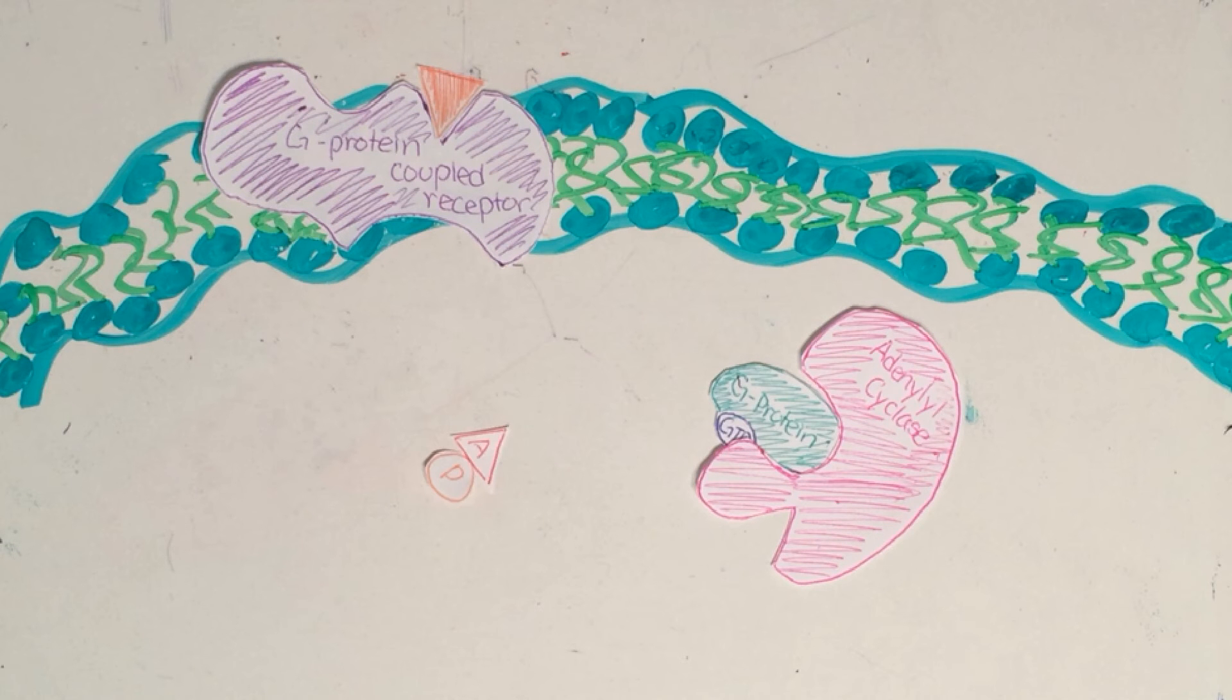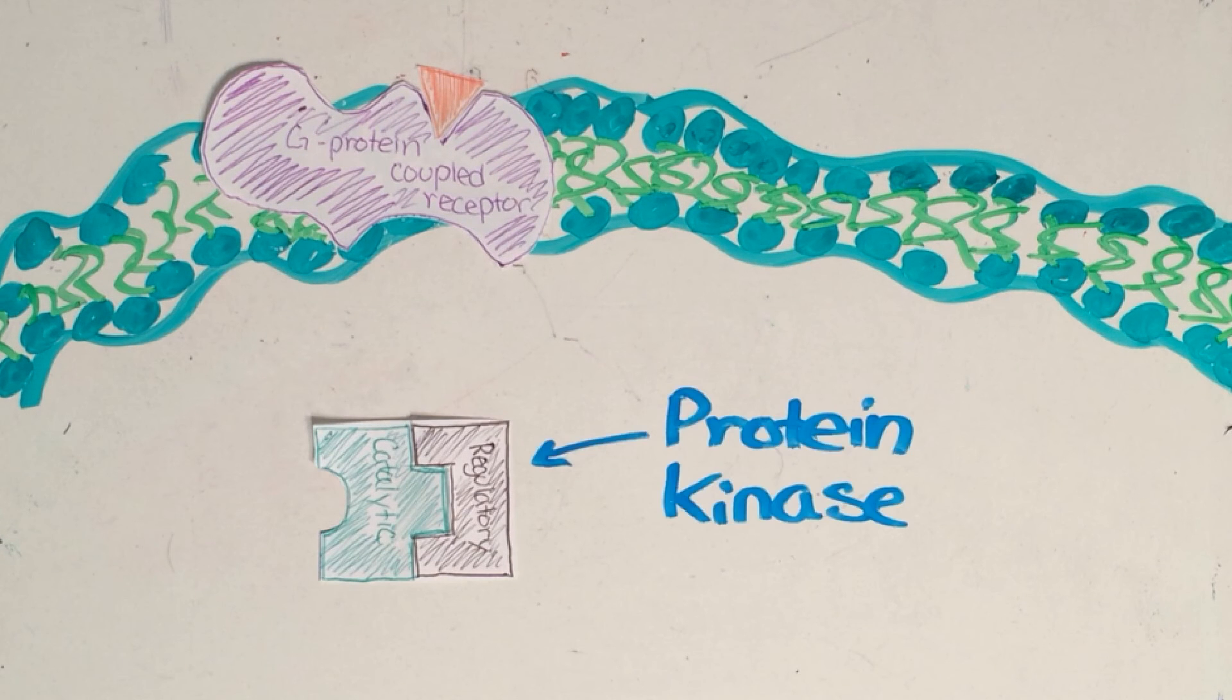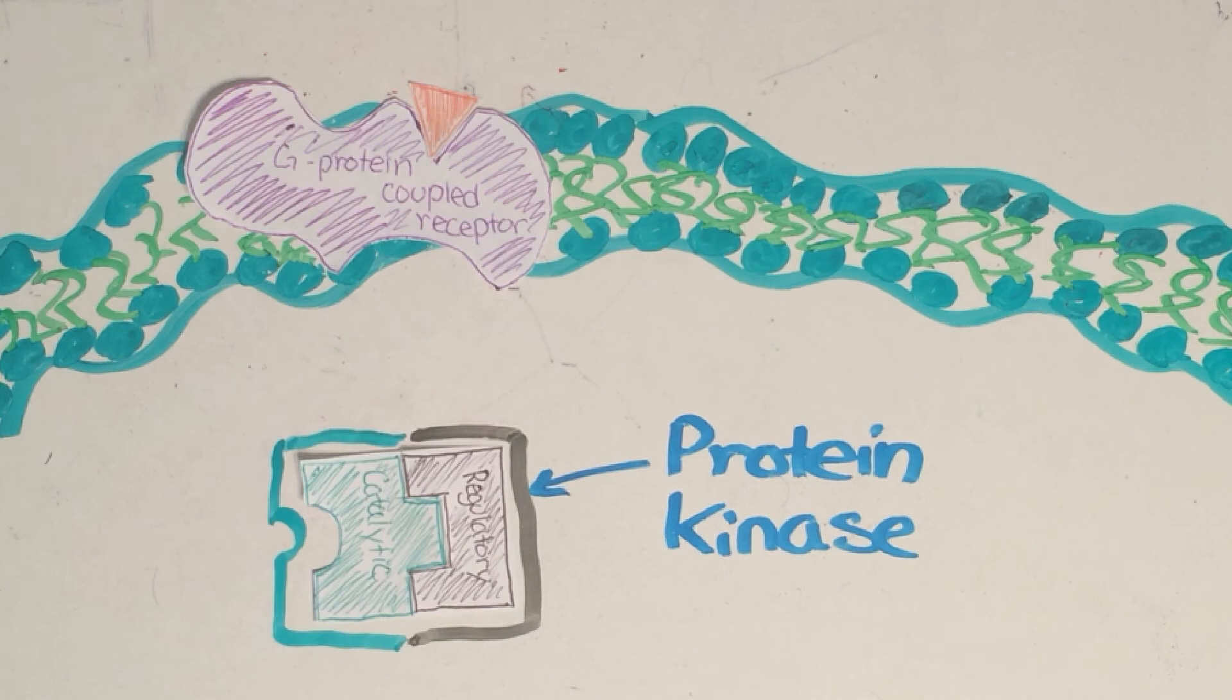Cyclic AMP serves as a second messenger by helping to activate protein kinases. Protein kinases have two parts, the regulatory protein and the catalytic protein.